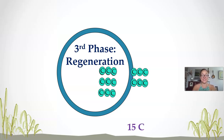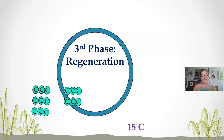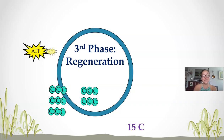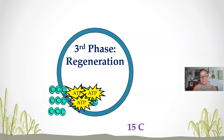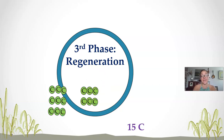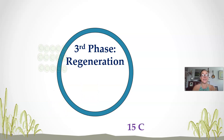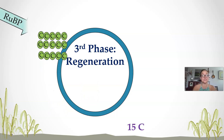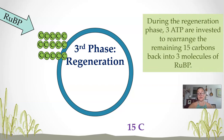The third phase of the Calvin cycle is the regeneration phase, where a few more ATP are invested — remember the Calvin cycle is an anabolic metabolic pathway — and things are reorganized back into your five molecules of RuBP. And that is it for the Calvin cycle; it can start all over again with the carbon fixation phase.